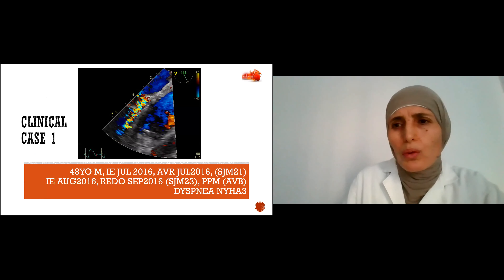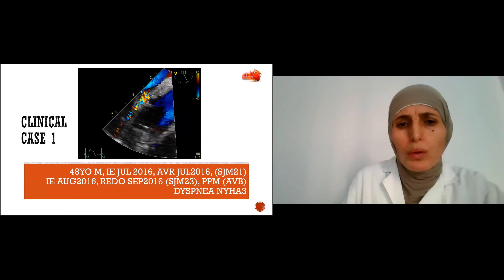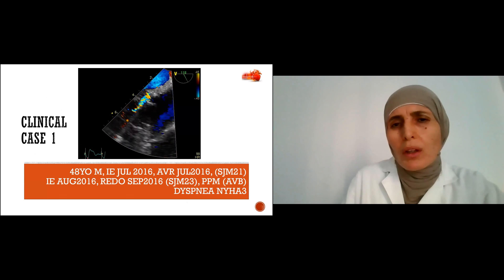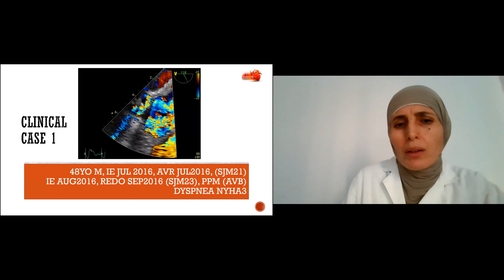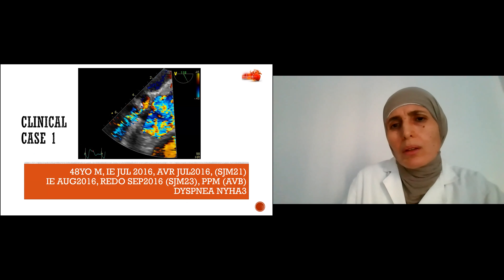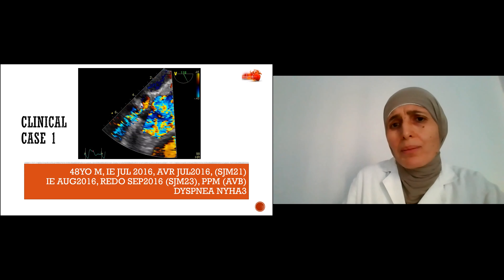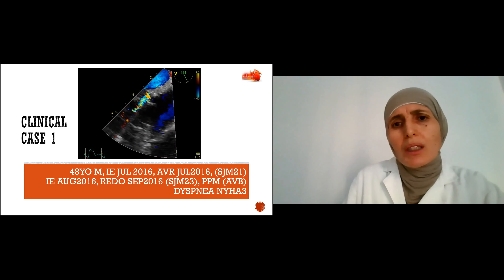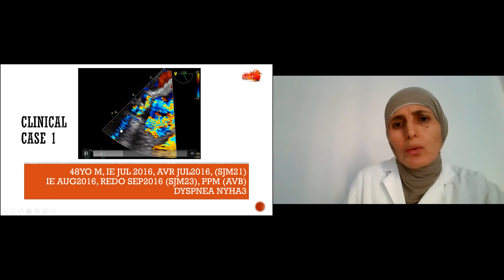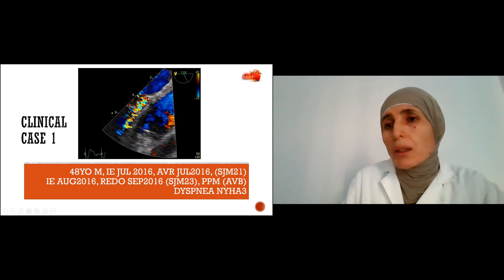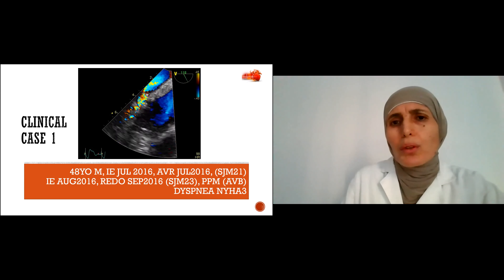This is a case of a 40-year-old male with a history of endocarditis and first aortic valve replacement, then a second aortic valve replacement after relapse of endocarditis, and a permanent pacemaker after the second surgery. He presents with dyspnea. On imaging we see an aortic regurgitation at the aortic root. Do we think this patient is suitable and a candidate for re-intervention?